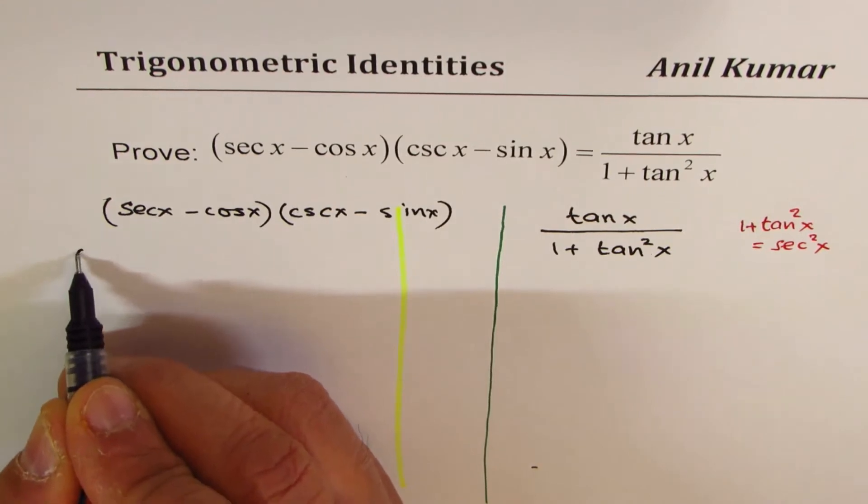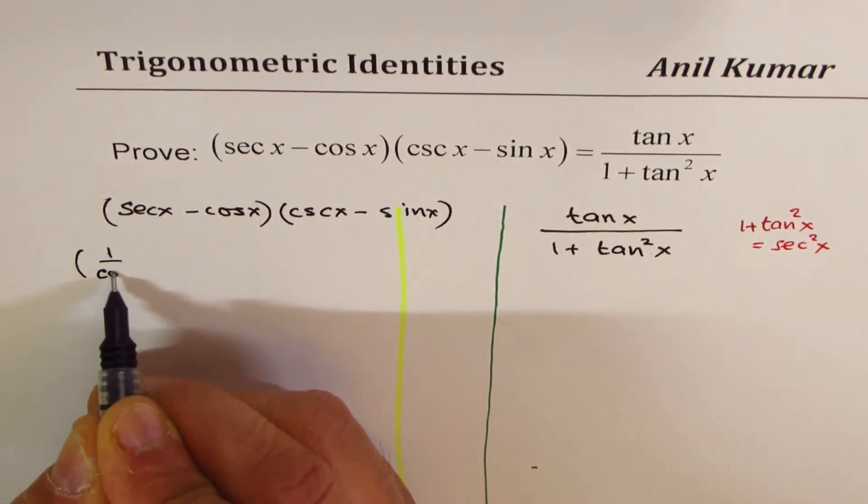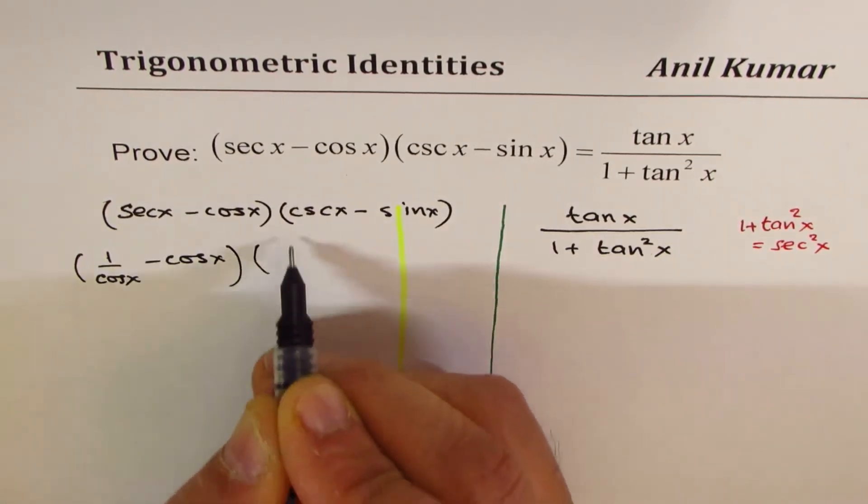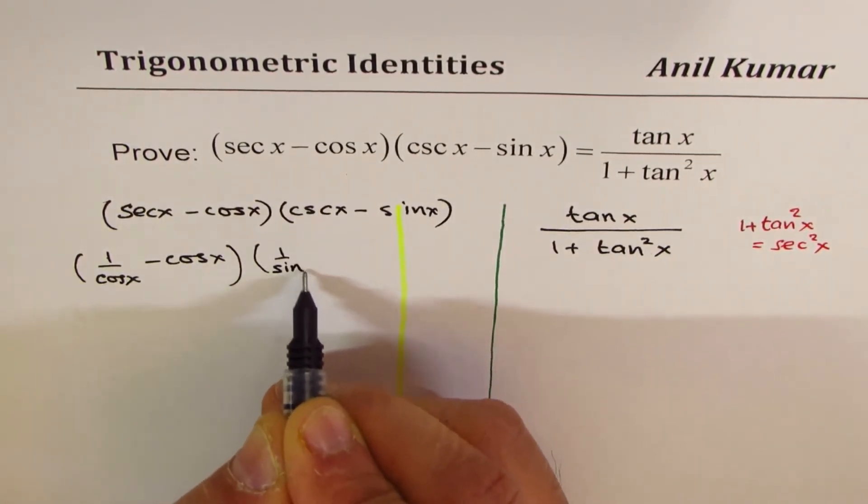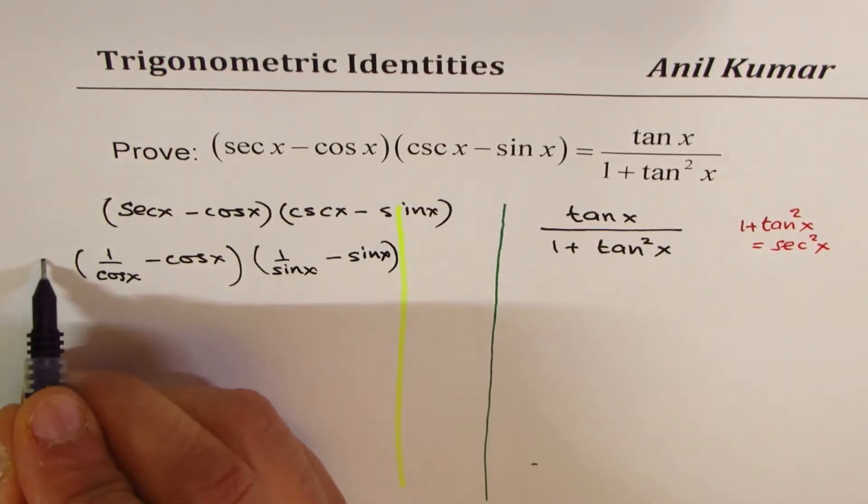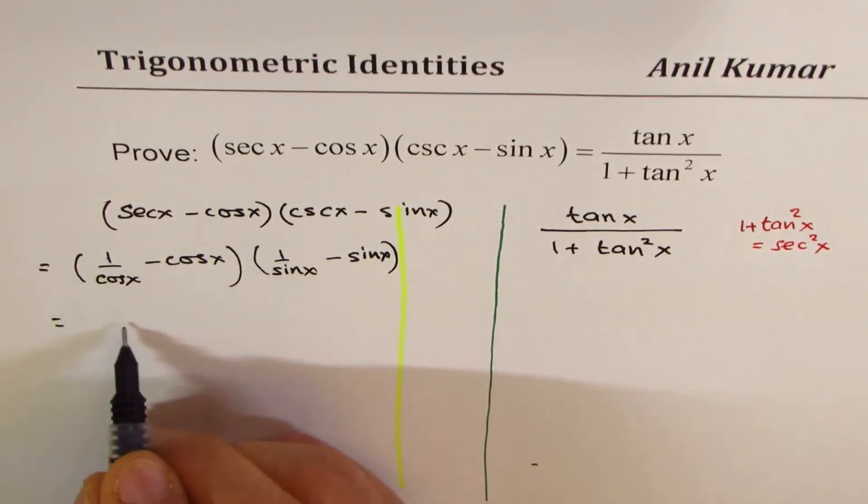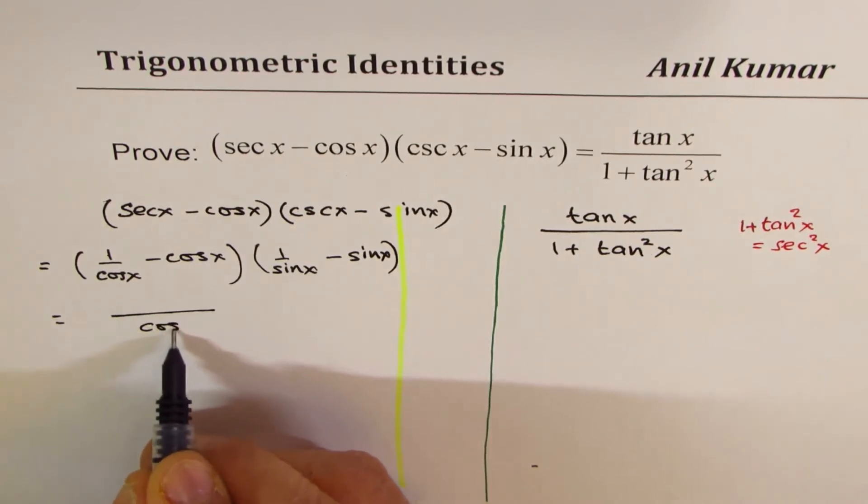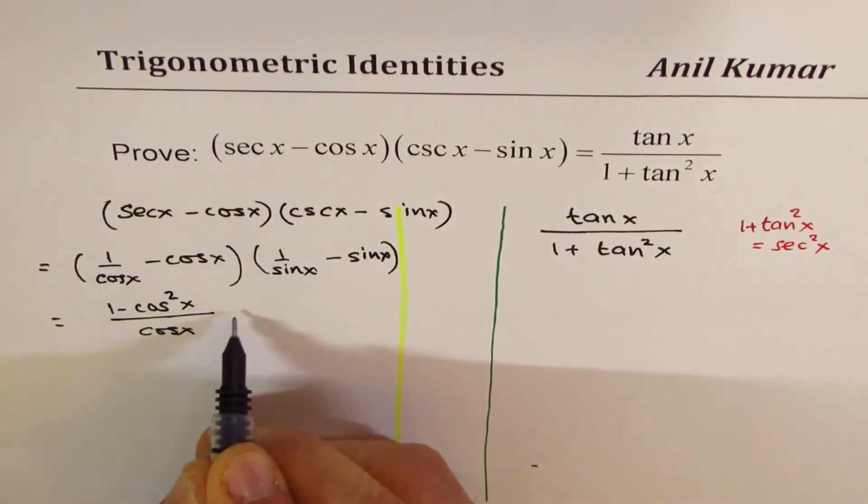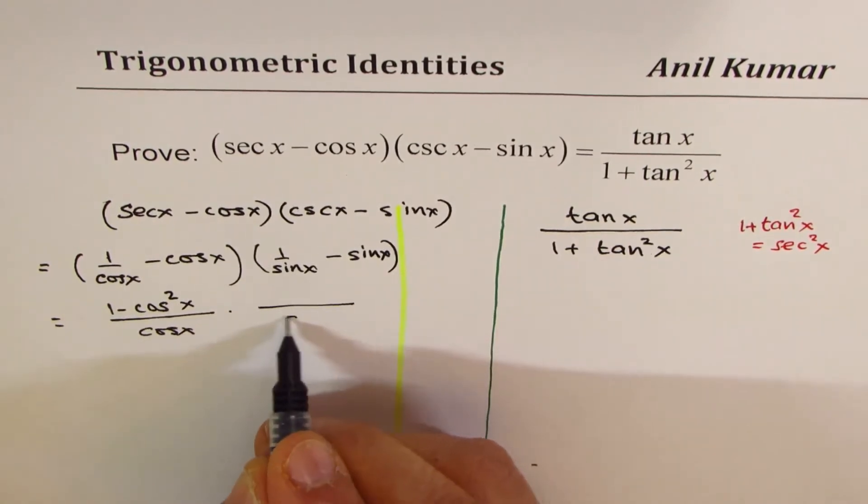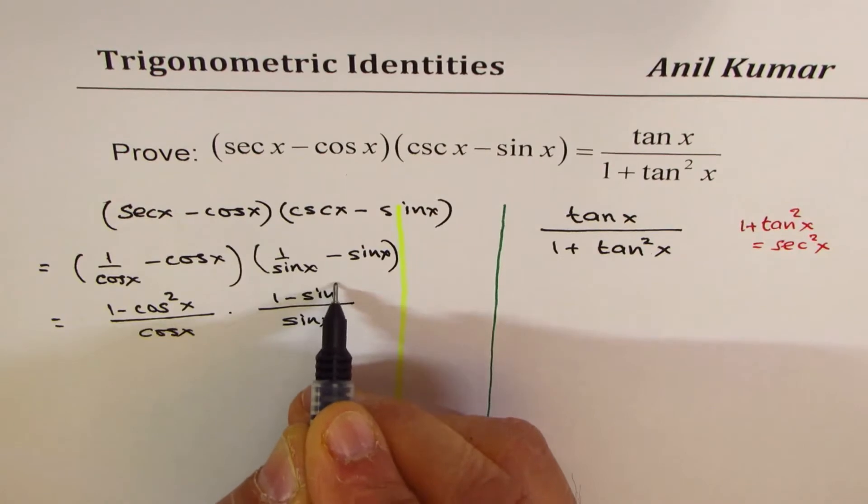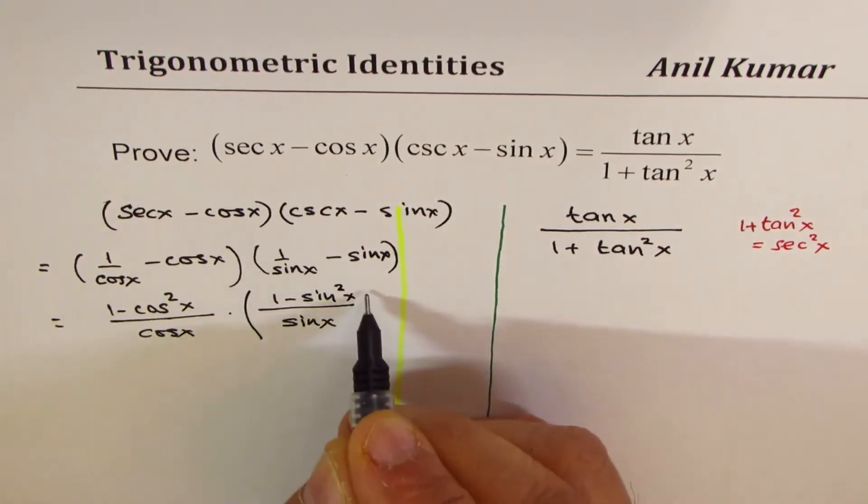Secant can be written as 1/cos x - cos x, and here we have 1/sin x - sin x. Now, we can take common denominator of cos x and we get (1 - cos²x) times common denominator of sin x, (1 - sin²x). So these are the two factors.